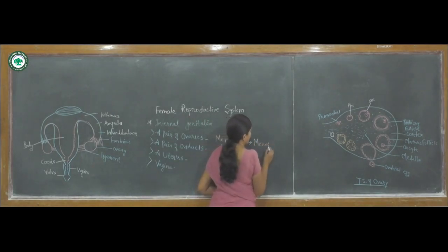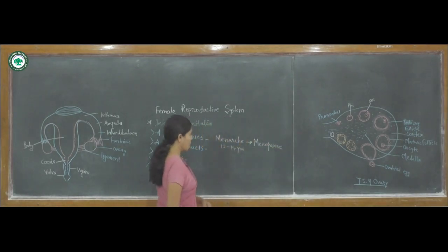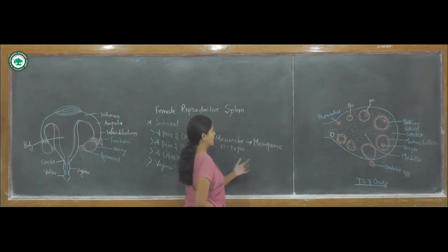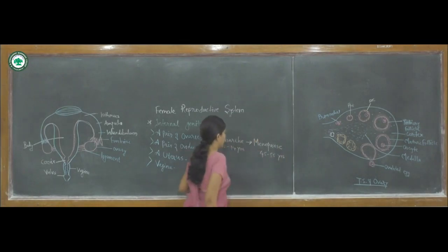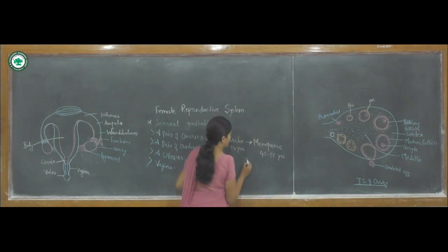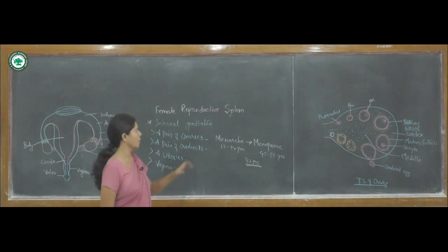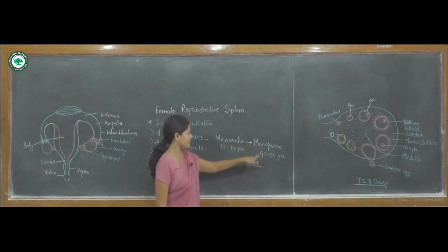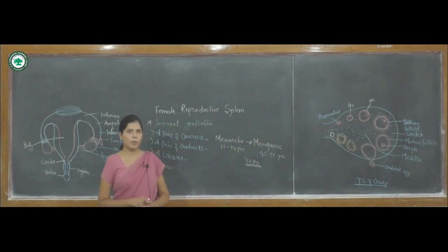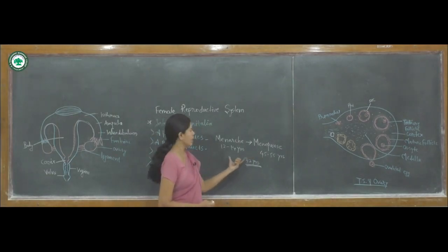The age of menopause, or stopping of the menstrual cycle, is between 45 to 55 years. This gives approximately 32 years as the reproductive period or reproductive age of the female. Only from menarche to menopause does the ovary produce eggs or ovum, and natural pregnancy is carried out in this period.